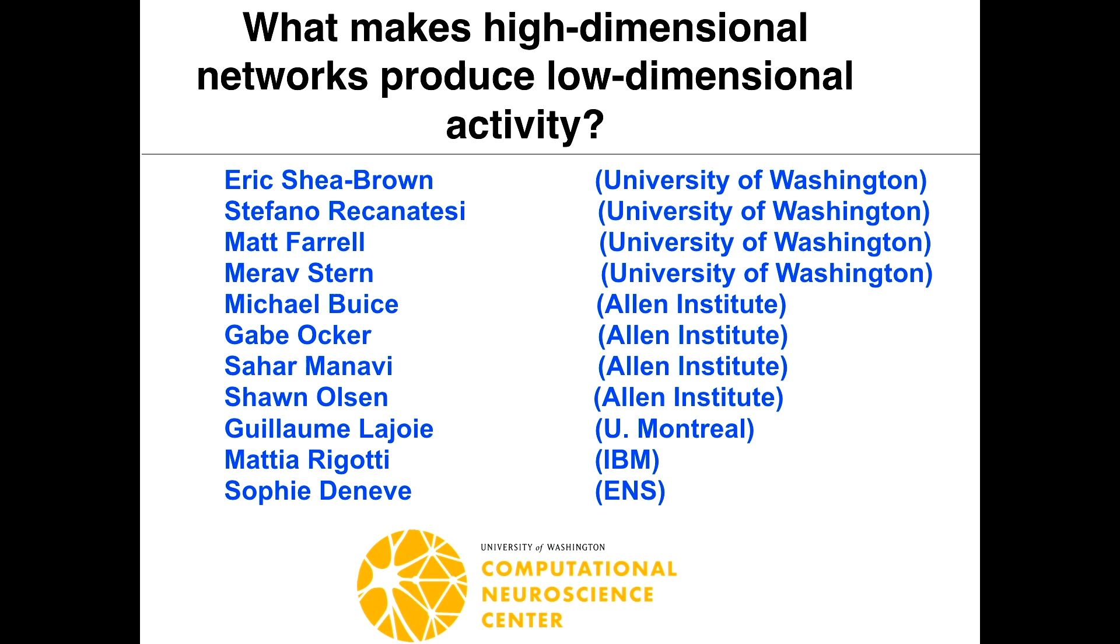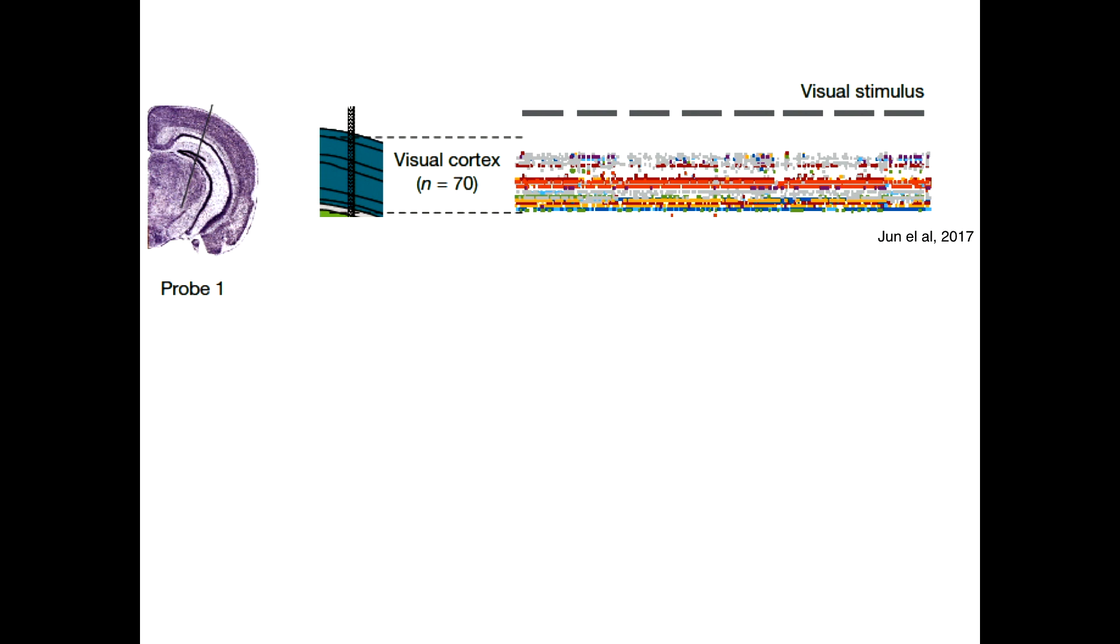Okay, thank you, Sir John. So this is joint work with Stefano Fusi at the University of Washington, Matt Farrell, Marav Stern, Michael Bice, Gabe Acker, Sahar Manavi, and Sean Olson at the Allen Institute, Guillaume Lajoie running his own group in Montreal, as well as collaborators Mattia Rigotti and Sophie Denev at IBM and in Paris.